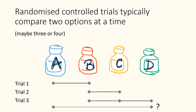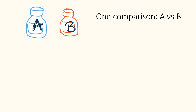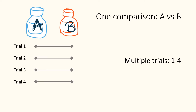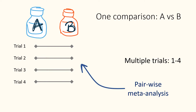For example, here A and D have not been directly compared in a trial. However, we still need to compare them to inform our recommendations. For the comparison of treatments A and B with evidence from multiple trials, we can conduct a pairwise meta-analysis.